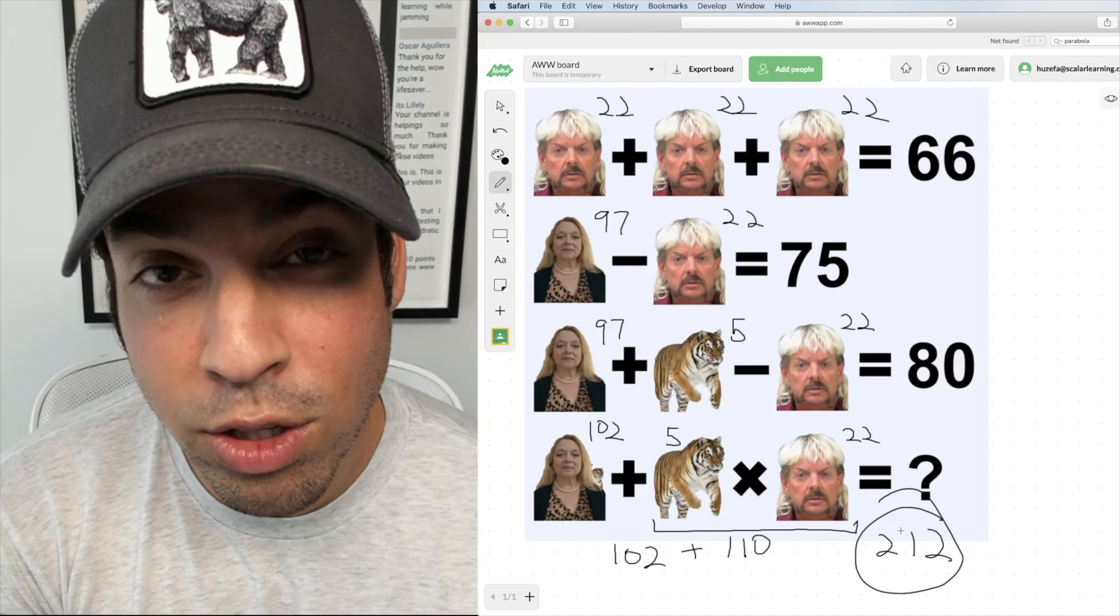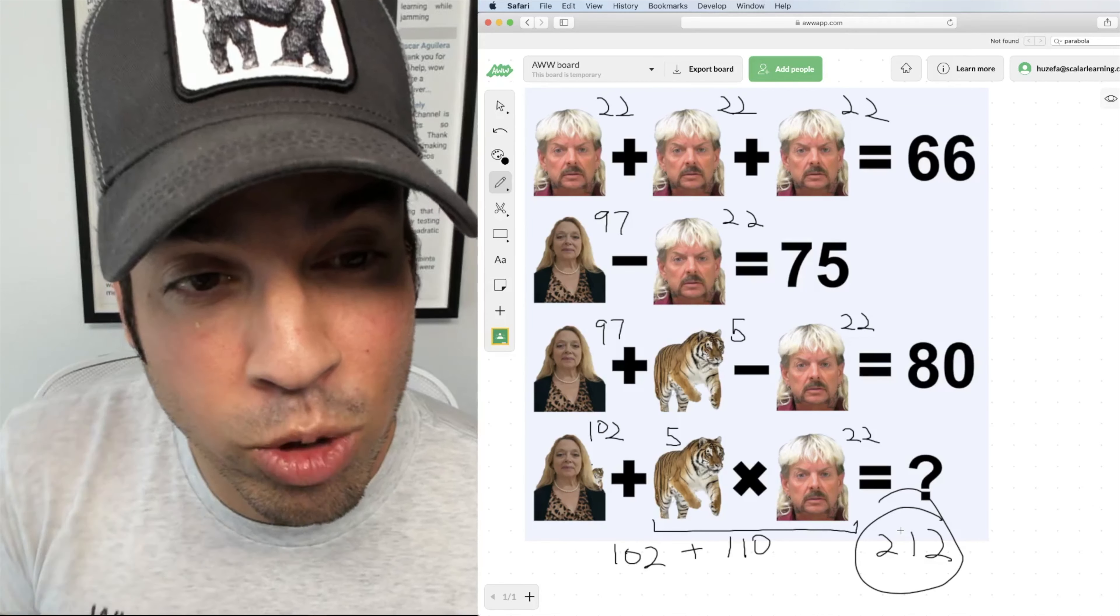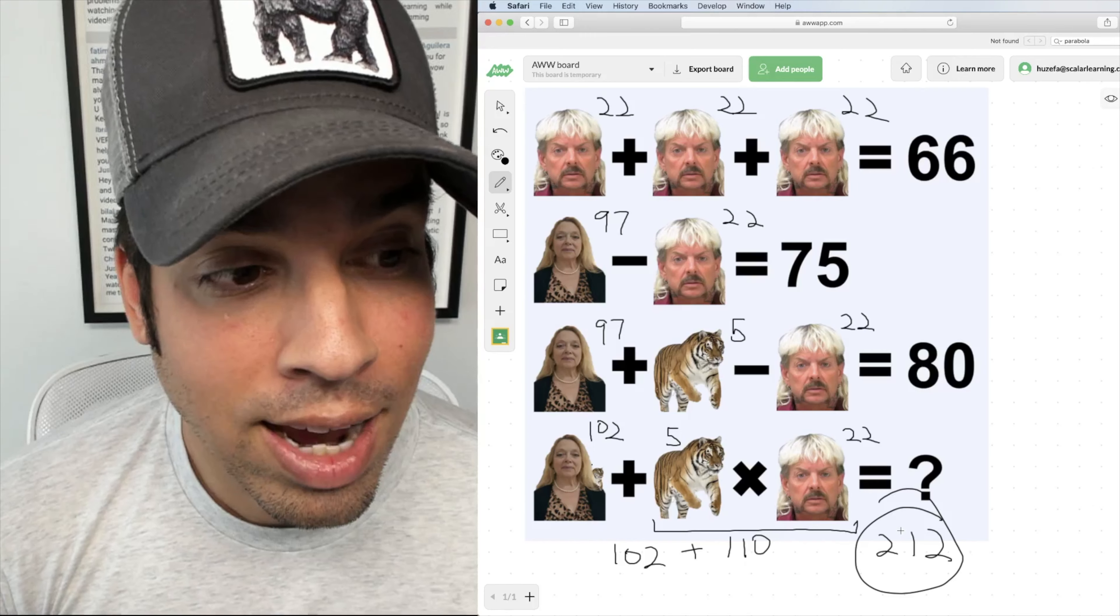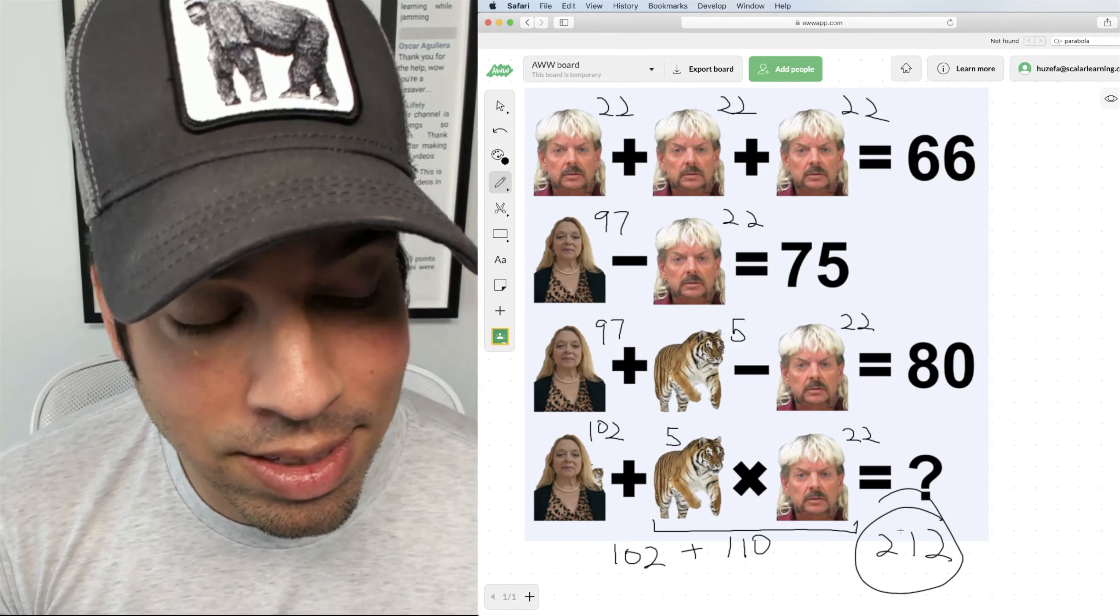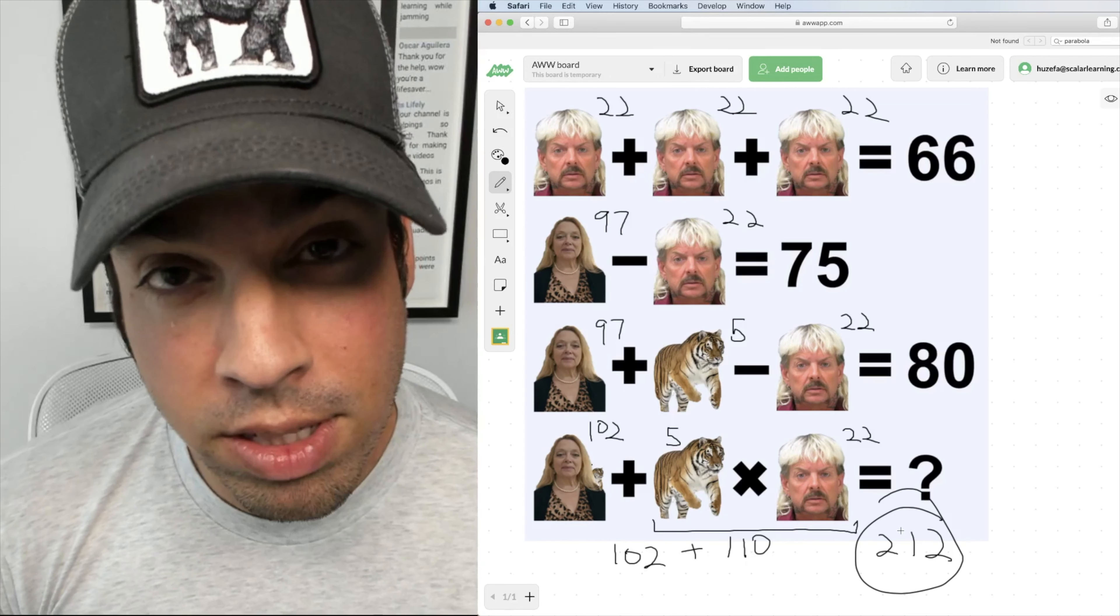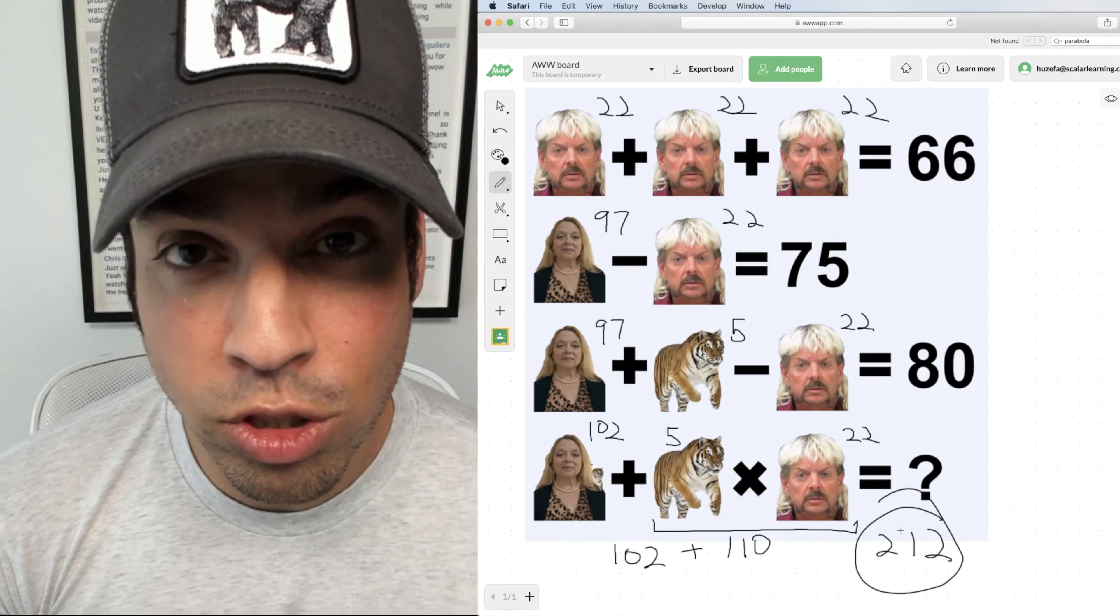By the way, for you Tiger King fans out there, there is a little bit of significance to these numbers. 22 is the sentence that Joe Exotic got, 22 years. 97 is the year that Carol Baskin's previous husband Don Lewis went missing, and 5 is the number of tigers that Joe Exotic was charged with.